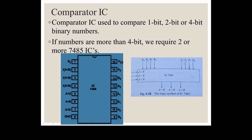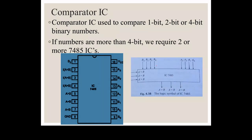The comparator IC is 7485. It is a 4-bit comparator IC, so two 4-bit numbers can be compared using IC 7485. The two 4-bit numbers are A0 to A3 and B0 to B3. These four bits are compared and we have three outputs: A greater than B, A equal to B, and A less than B. There are also three cascading input pins: A less than B, A greater than B, and A equal to B, used for cascading purposes.